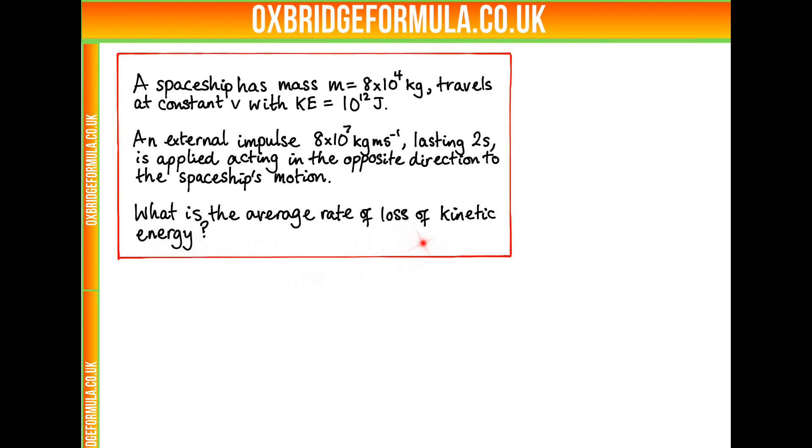So we want to work out the average rate of loss of kinetic energy, which is essentially the power dissipation. But what formula would be useful in order to get the change in kinetic energy over time? Because of the mention of impulse and kinetic energy, the go-to expression is to use KE equals p squared over 2m, involving the momentum. Once we get the initial momentum, then when we take away the impulse part, because it's acting in the opposite direction, we can get the new momentum, and then use that for the new kinetic energy.